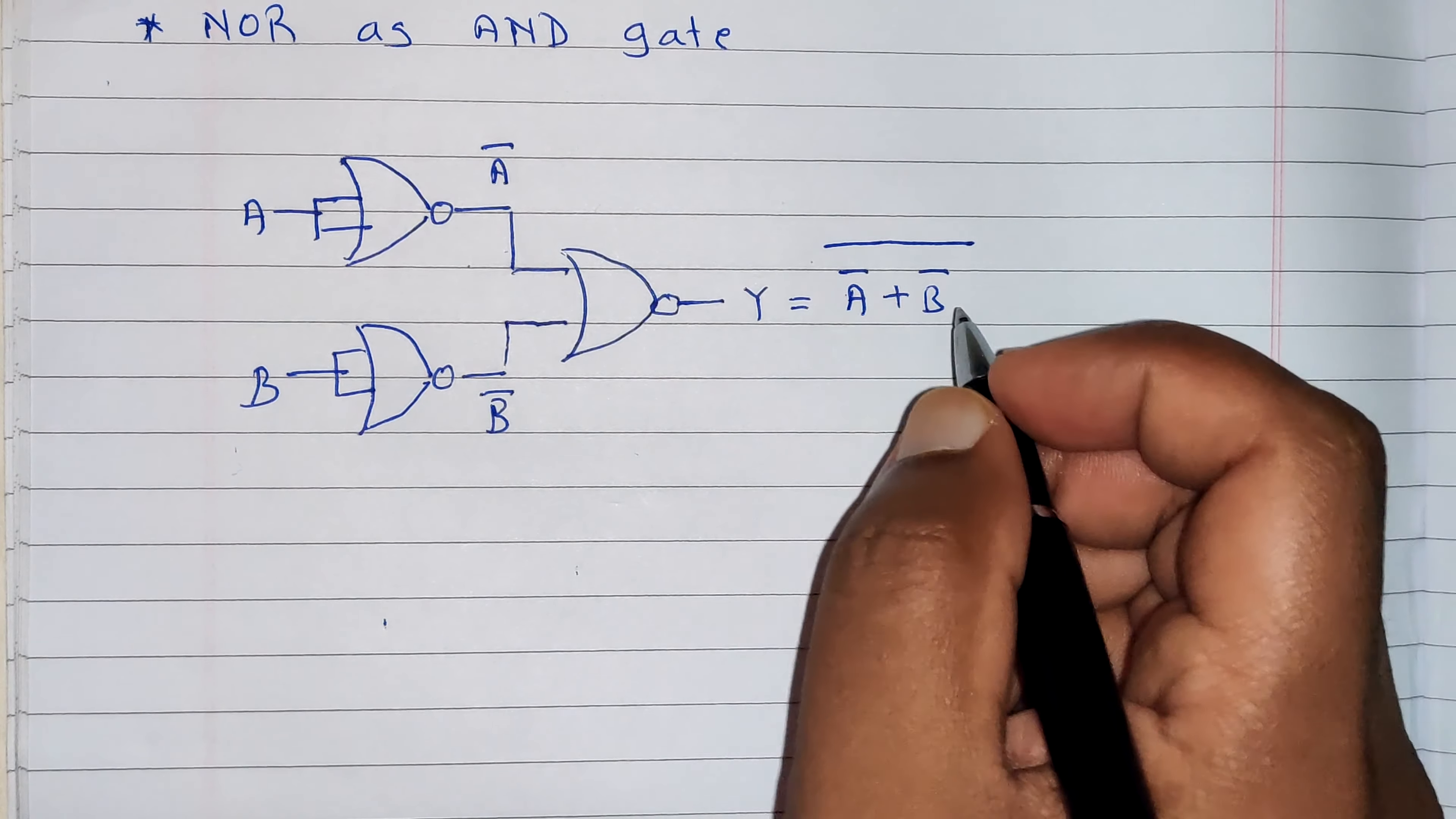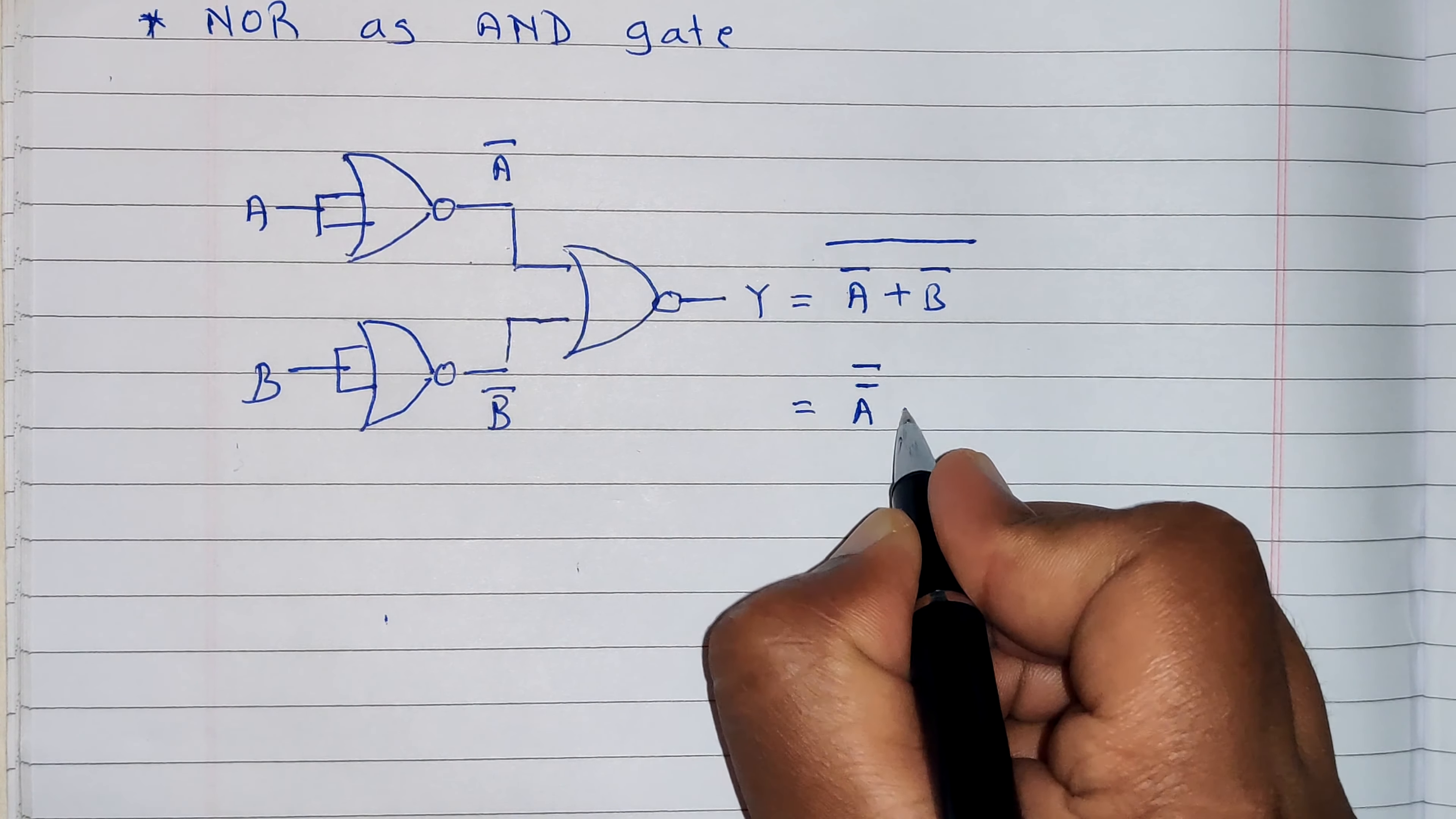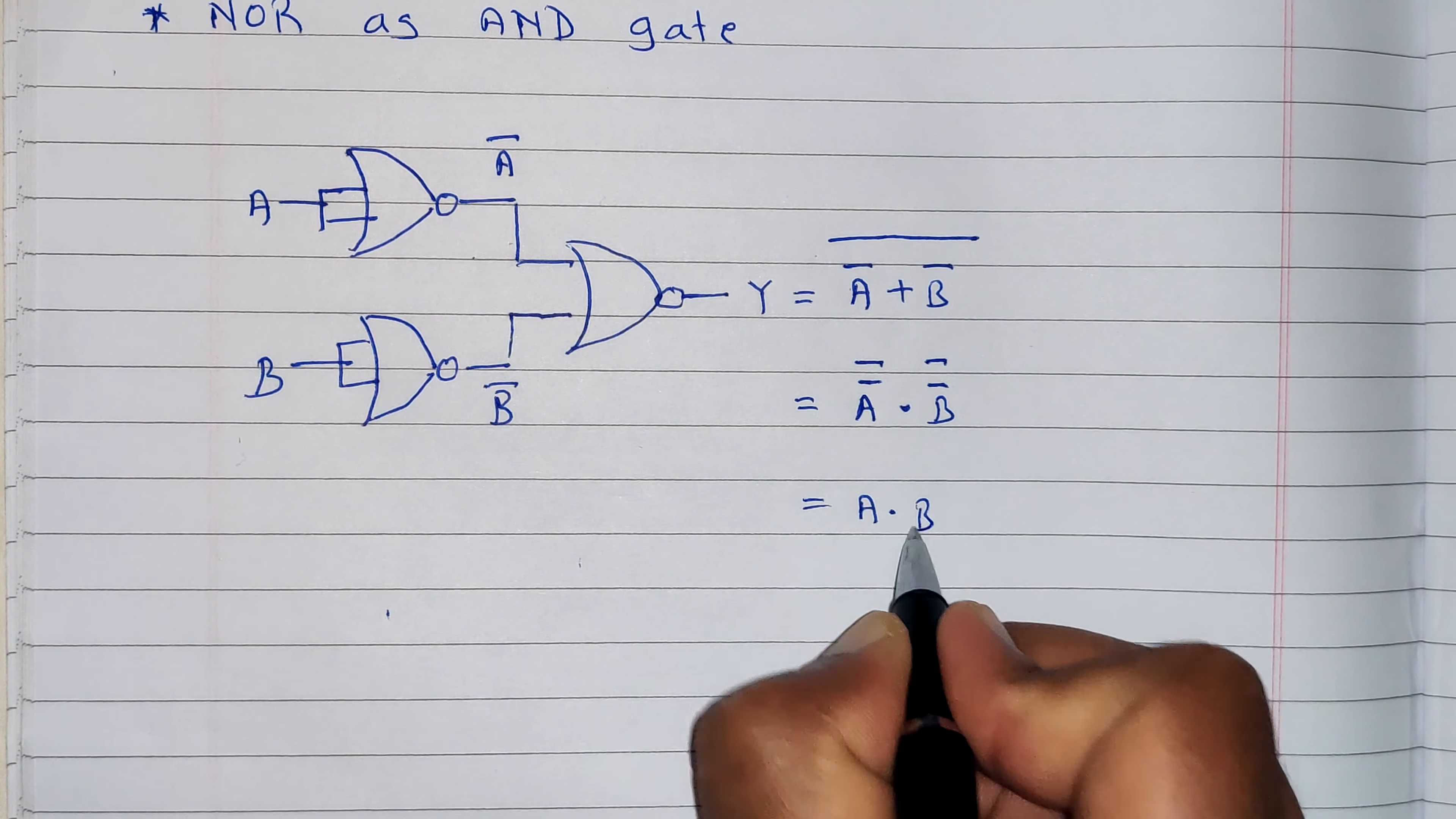Now we will apply De Morgan's law over here, and because of De Morgan's law we can break this bar and change this sign into multiplication. So we will get A bar the whole bar dot B bar the whole bar. So A bar bar dot B bar bar. Now when we take bar twice, we are going to get the same thing. So it is nothing but A dot B.